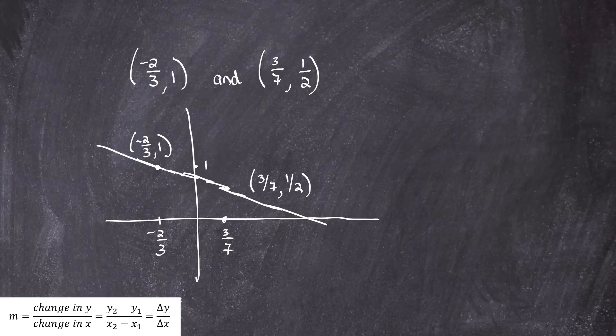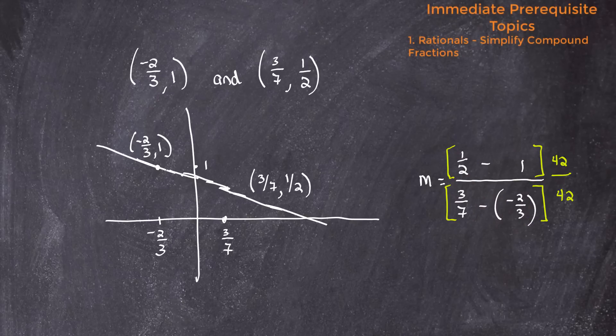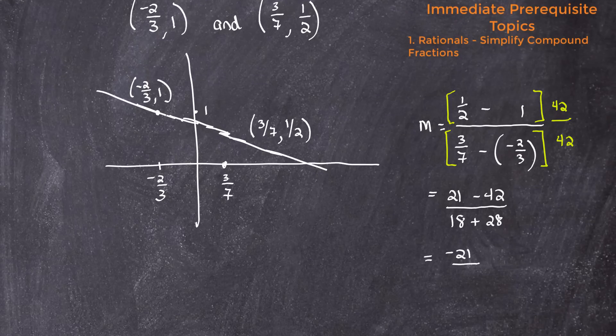Anyhow, slope is rise over run or change in output over change in input. So let's take a look at these points. Change in output over change in input is what we're looking for here. The outputs are one and one half, the inputs are negative two thirds and three sevenths. I have a habit of choosing the second point and writing that first, but slope works both directions so you could choose to write the first point first and the second point second. Anyhow, change in output: my output ends at one half so I'll write that, minus and it begins at one, so one half minus one. My inputs end at three sevenths minus and begins at negative two thirds.